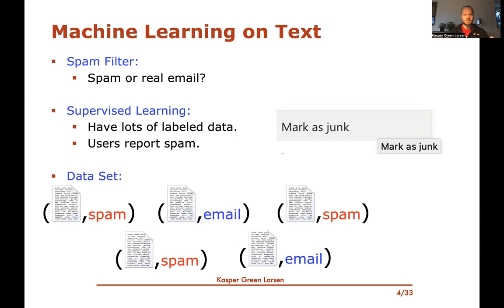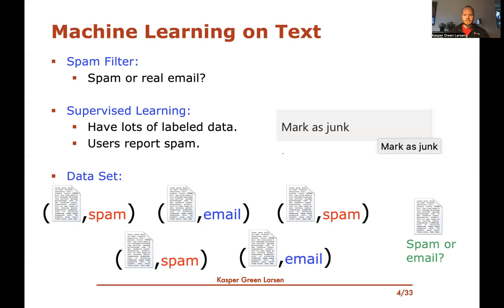The dataset we would have for training such a spam filter or classifier will consist of pairs where the feature vector — the input element from the input domain — would be a document or text, an email text. And the label would be either spam or regular email. So we have these two classes: just a binary classification problem, like we've looked at many times in the previous videos.